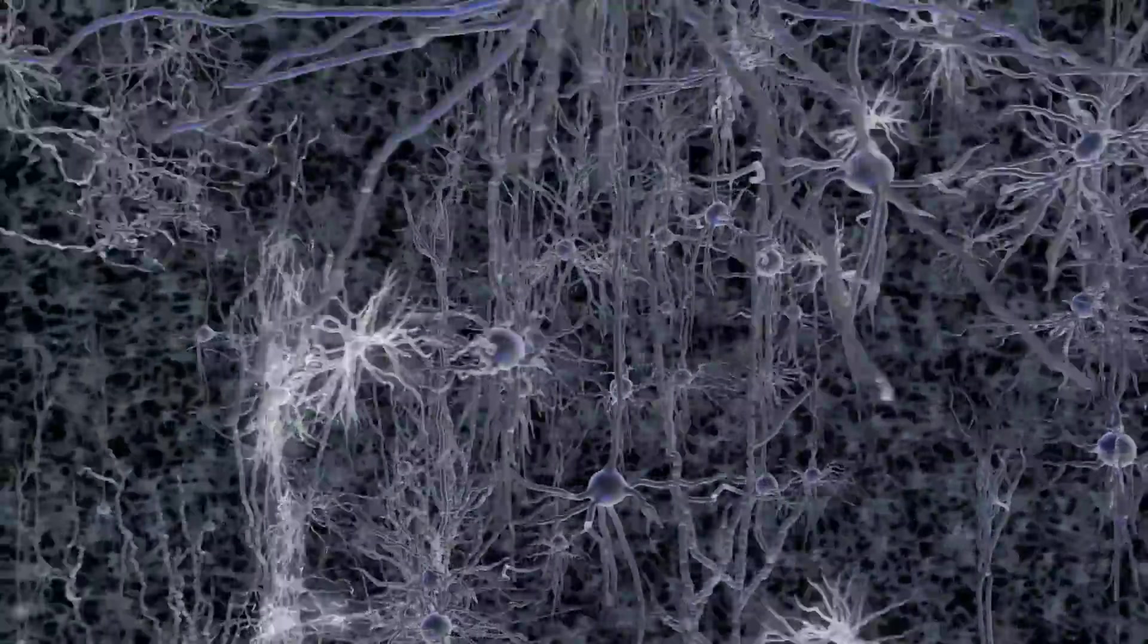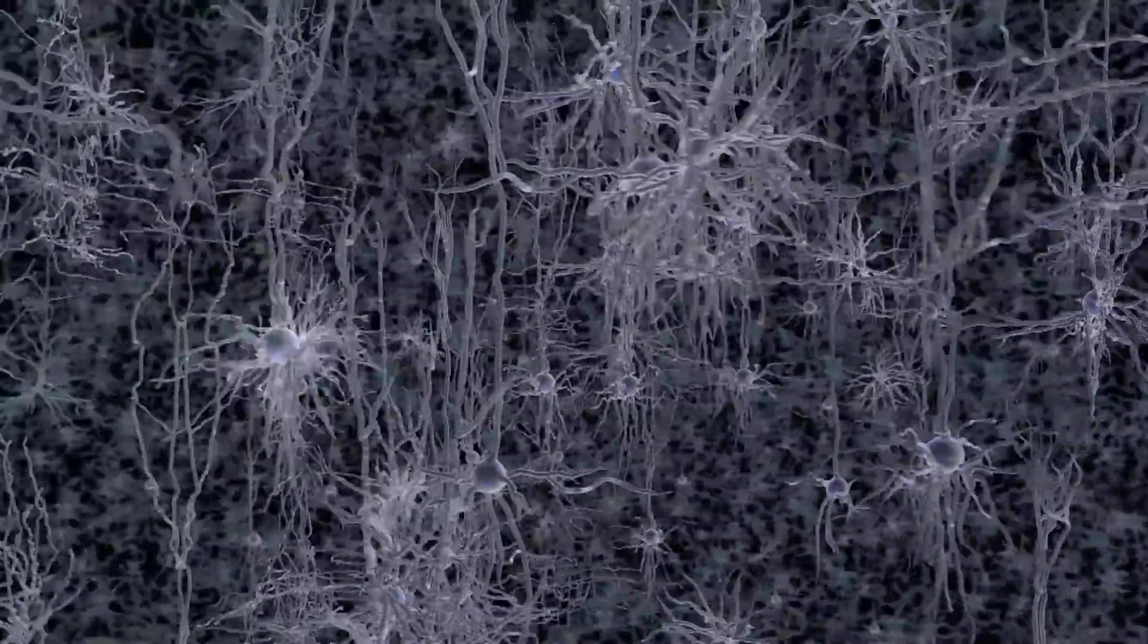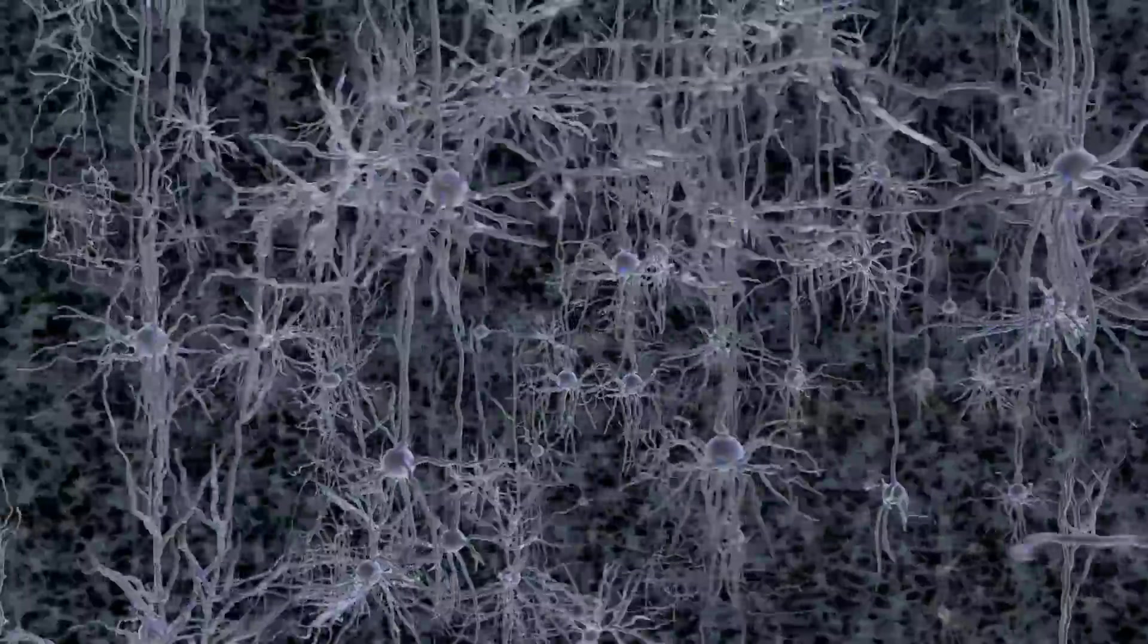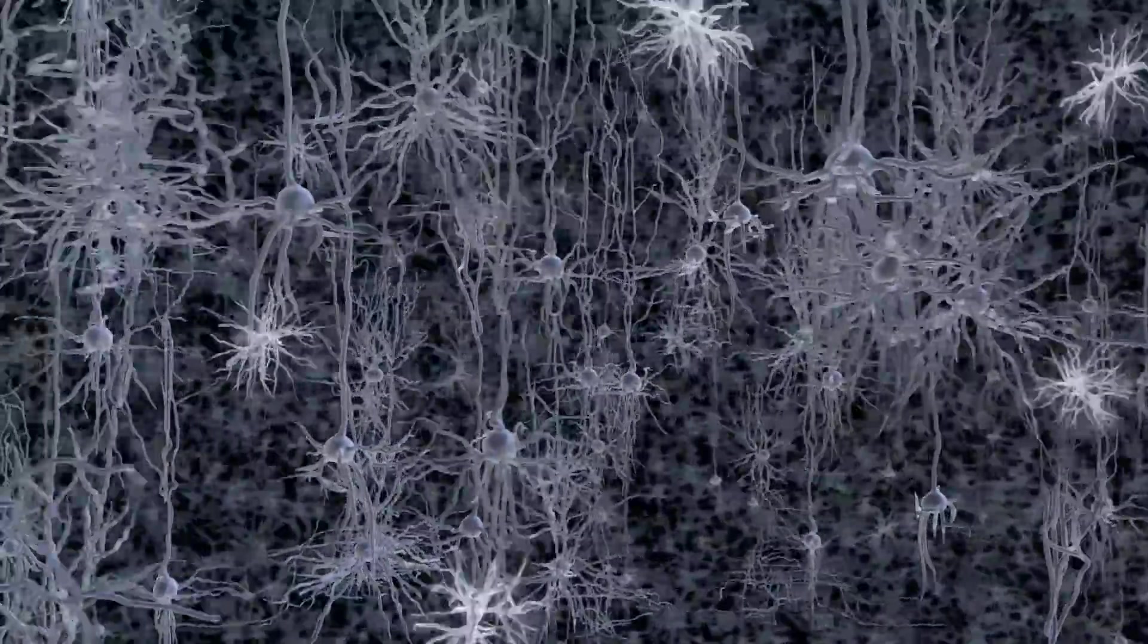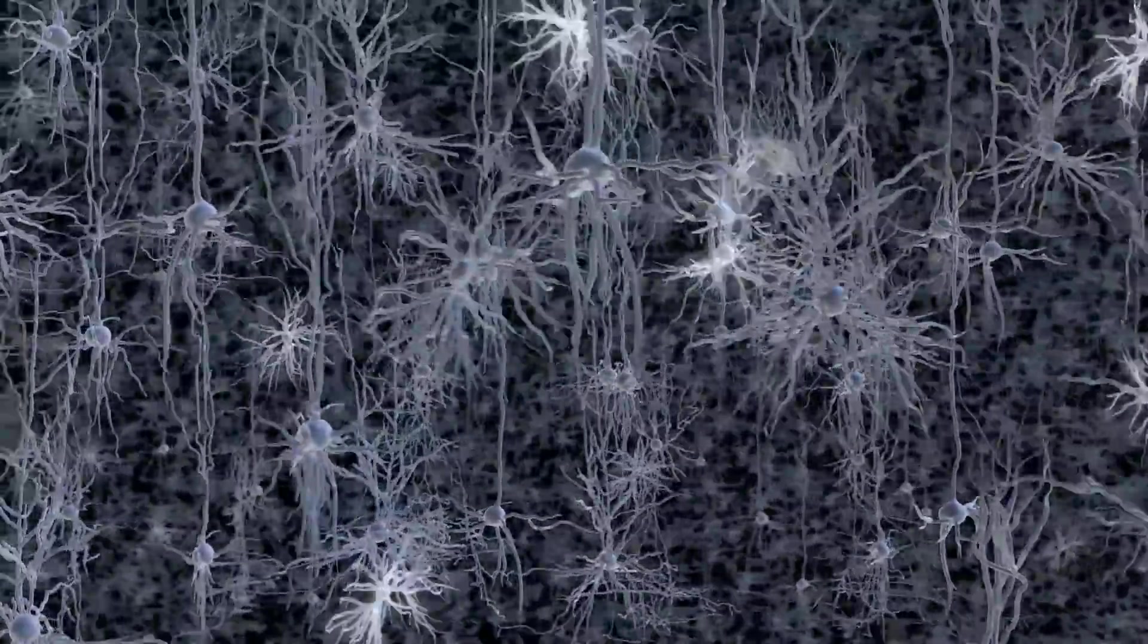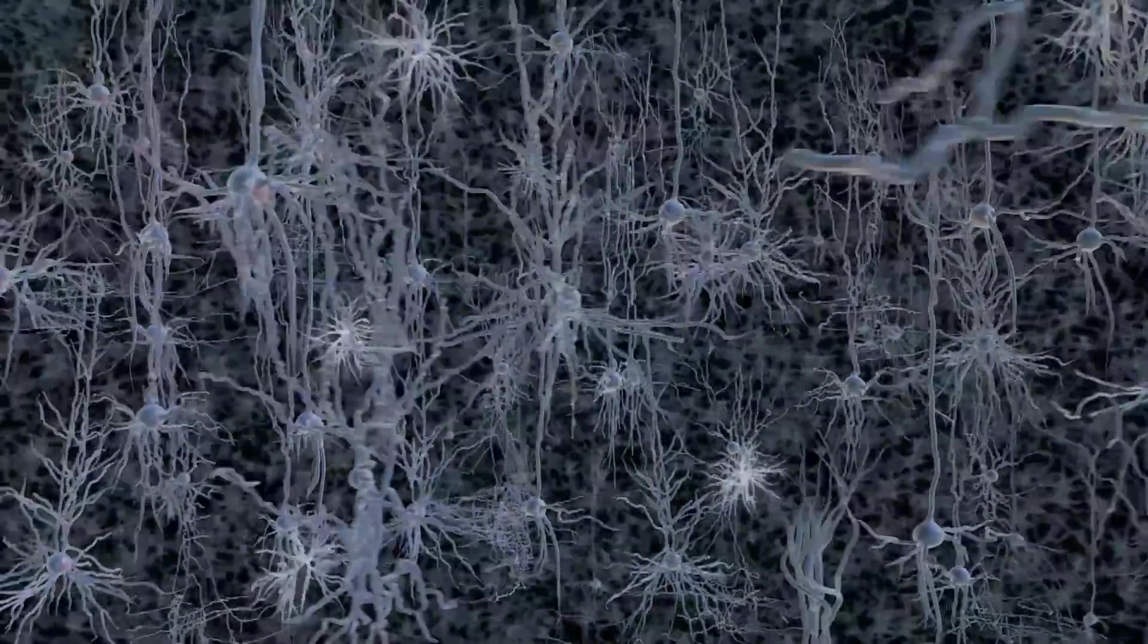By seeing how each type of neuron changes in a given brain disorder, one could identify molecules that distinguish unhealthy cells from healthy ones, which could then serve as better targets for novel drugs that have fewer side effects.